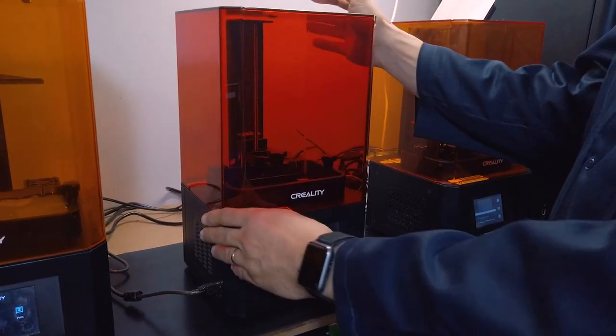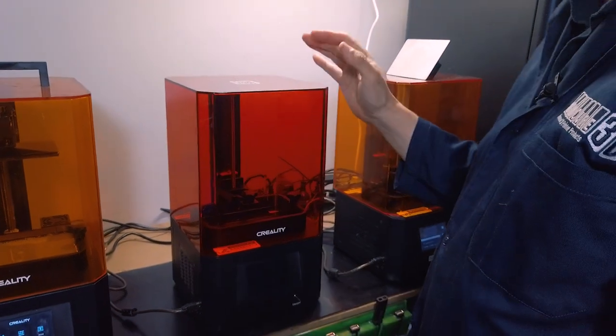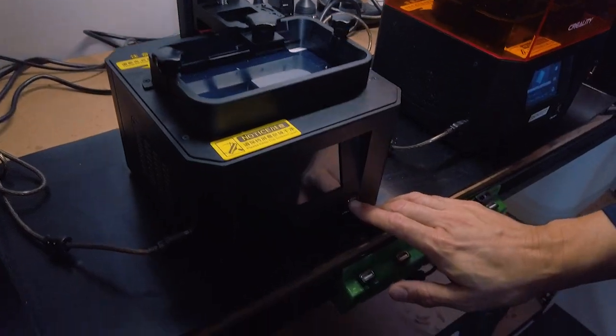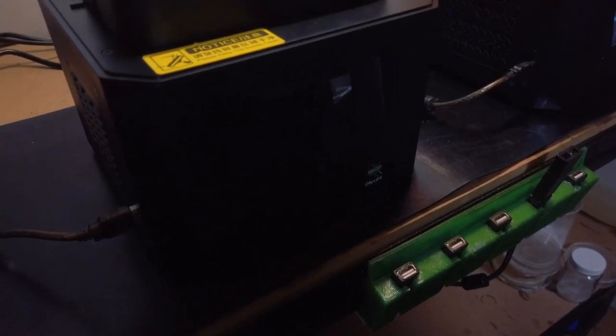Now we're going to look at the LD-002H. This is the new monochrome version of the LD-002R. So let's have a look under the cover now. All right, so the first thing we need to do is turn it on and raise up the z-axis.